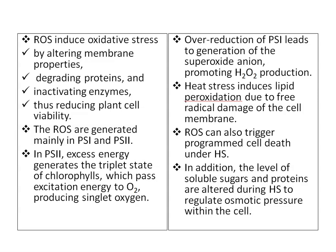In PS2, excess energy generates the triplet state of chlorophylls, which pass excitation energy to oxygen, producing singlet oxygen. Overproduction in PS1 leads to generation of superoxide ions, promoting hydrogen peroxide (H2O2) production. Heat stress induces lipid peroxidation due to free radical damage of the cell membrane. ROS can also trigger programmed cell death under heat stress. In addition, the level of soluble sugars and proteins are altered due to heat stress to regulate osmotic pressure within the cell.